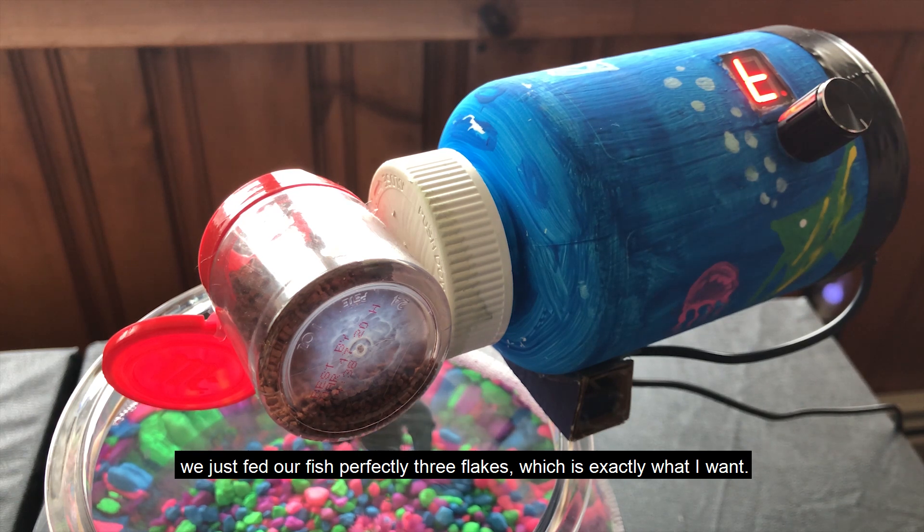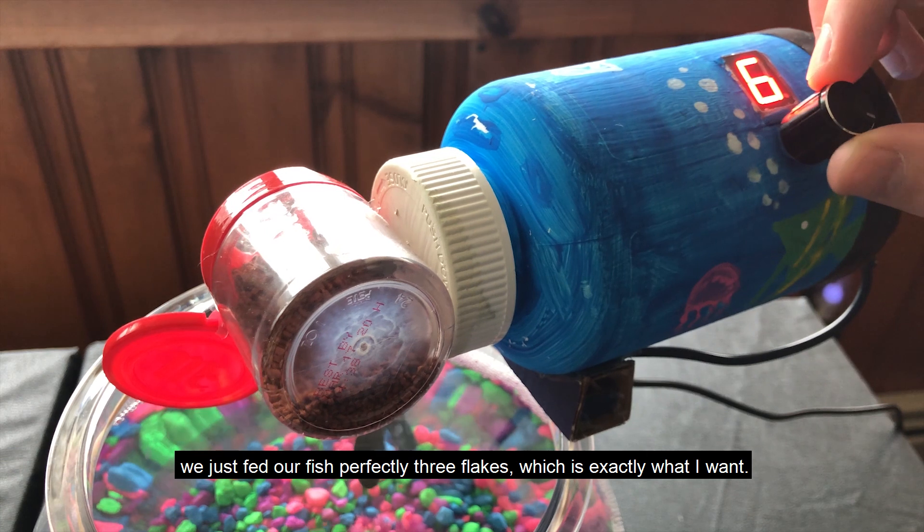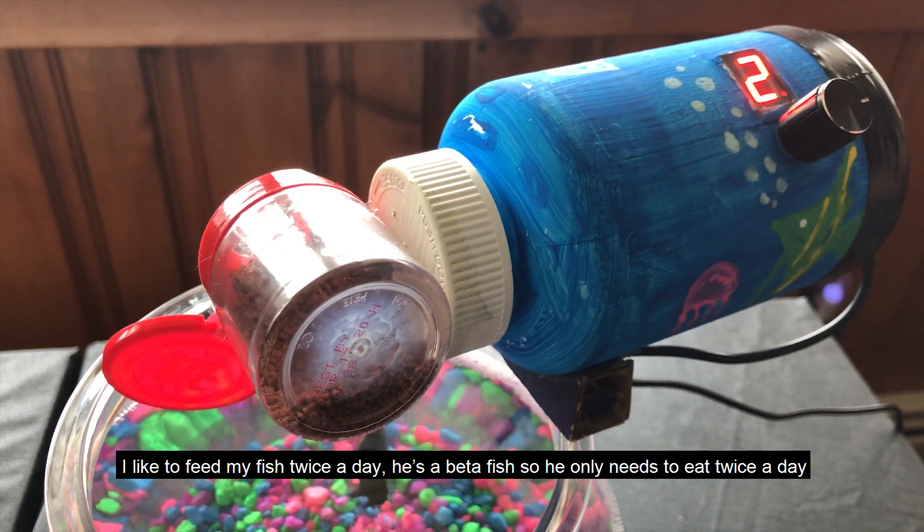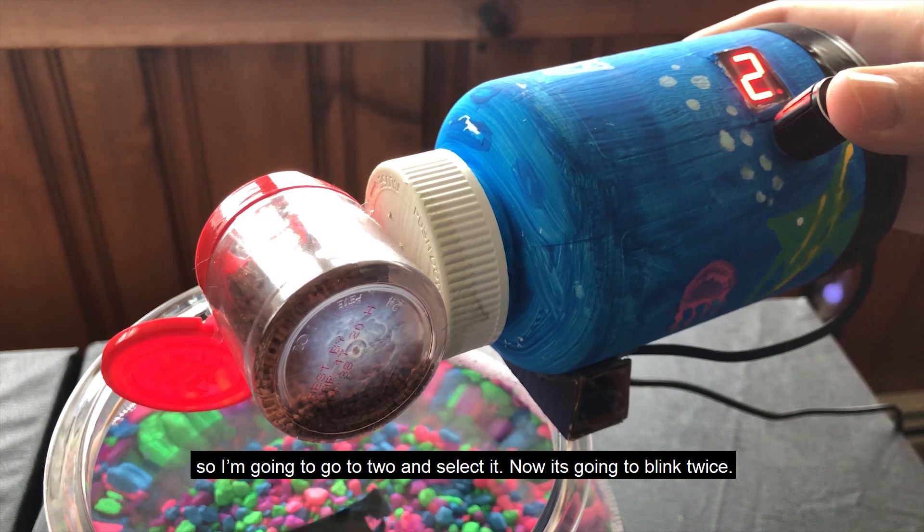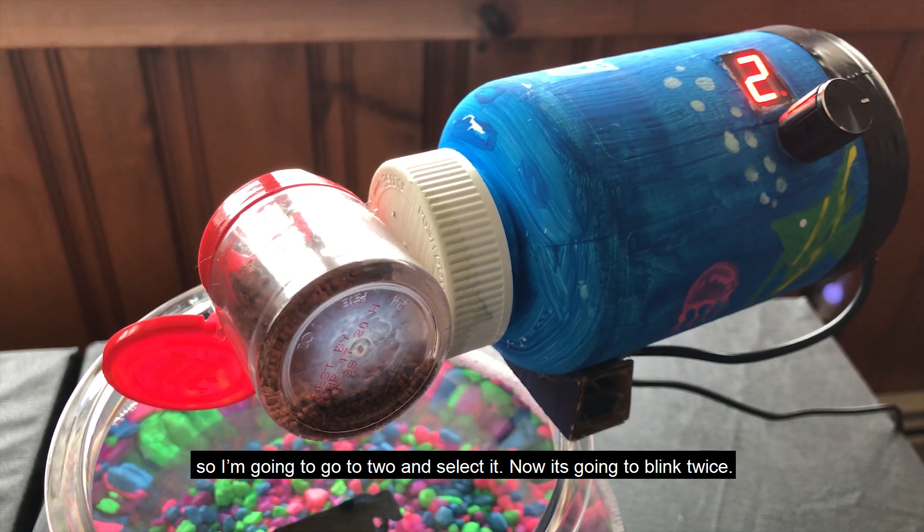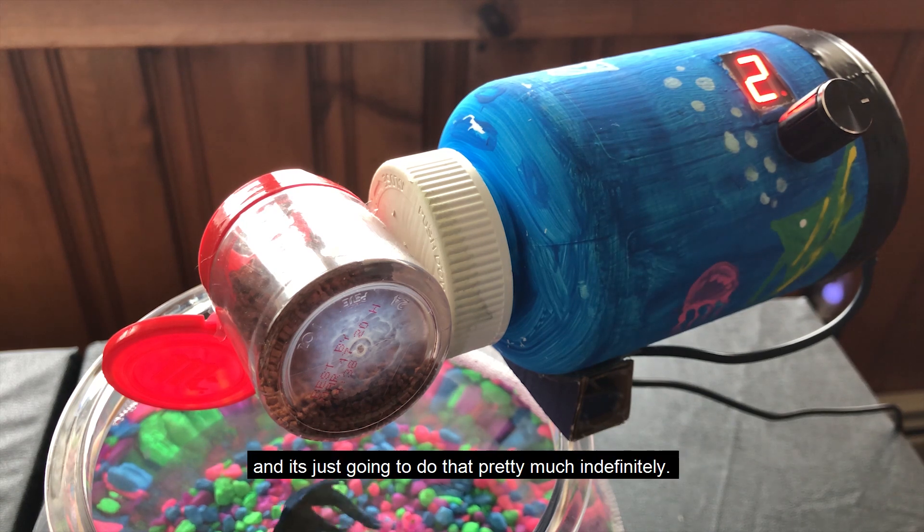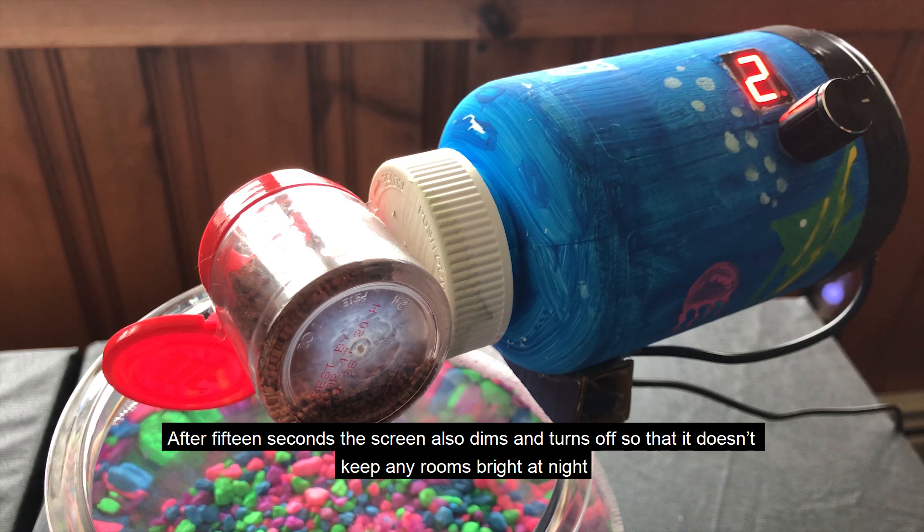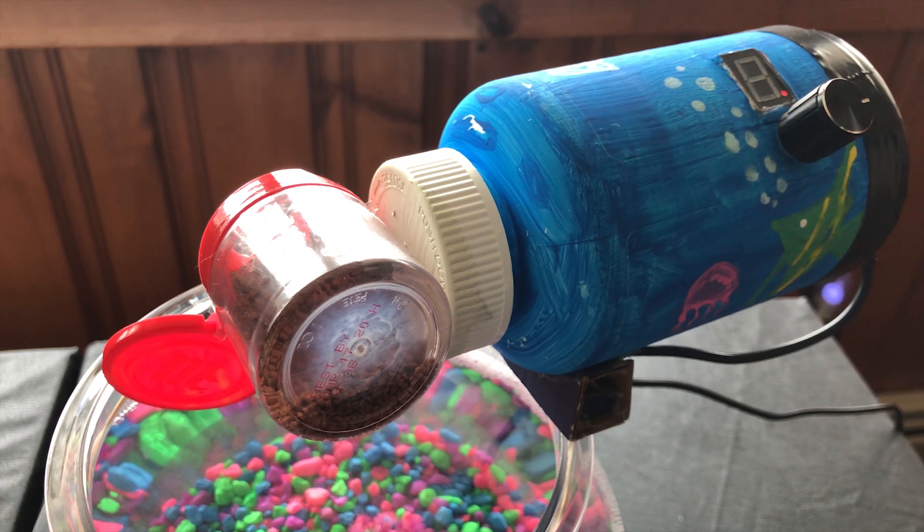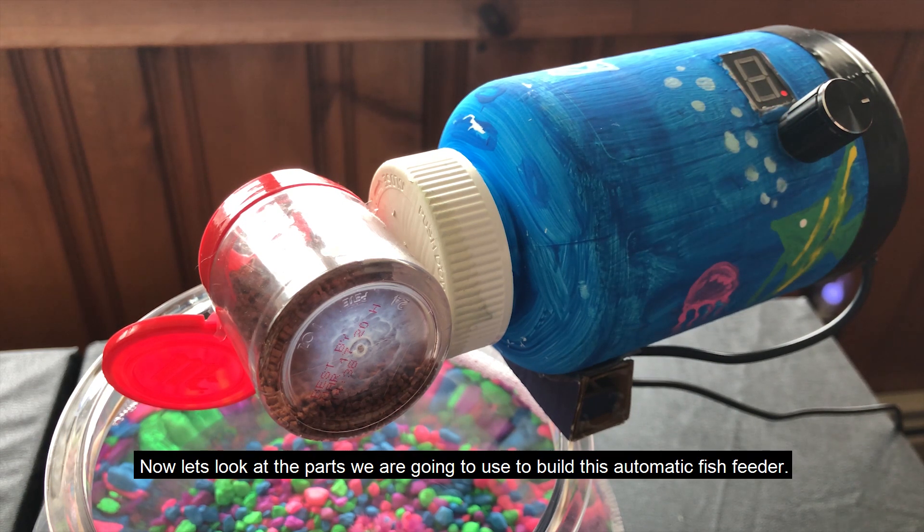I like to feed my fish twice a day. He's a betta fish, so he only needs to eat twice a day. I'm going to go to two and select it. Now it's going to blink twice, so from this time forward it's going to feed once every 12 hours, and it's just going to do that pretty much indefinitely. After 15 seconds, the screen also dims and turns off so it doesn't keep any rooms bright at night. Now let's look at the parts that we're going to use to build this automatic fish feeder.